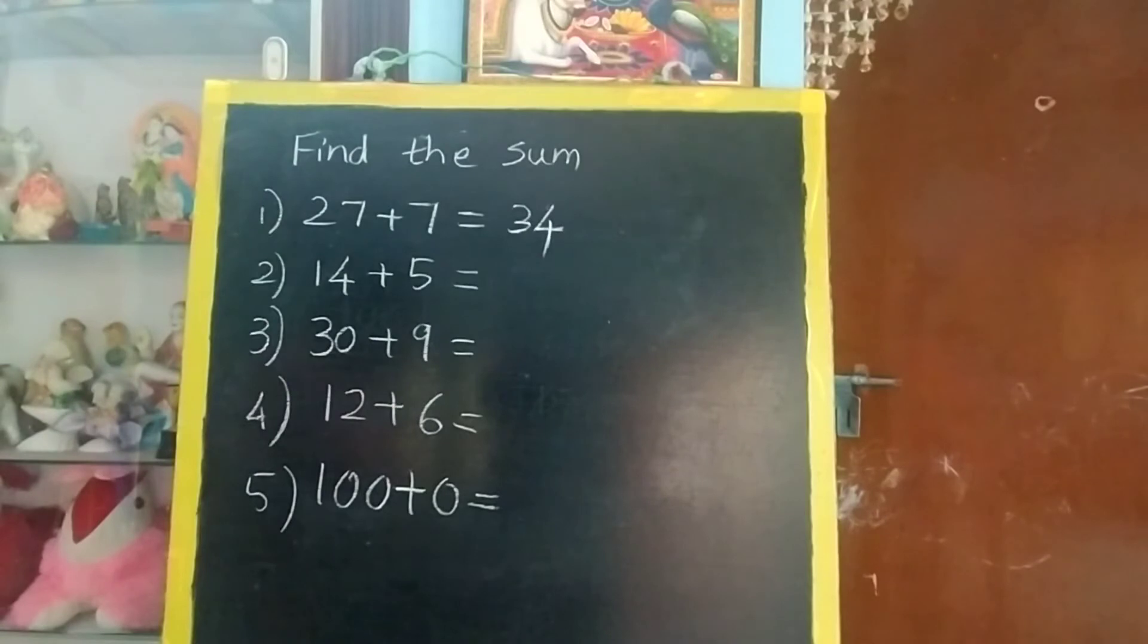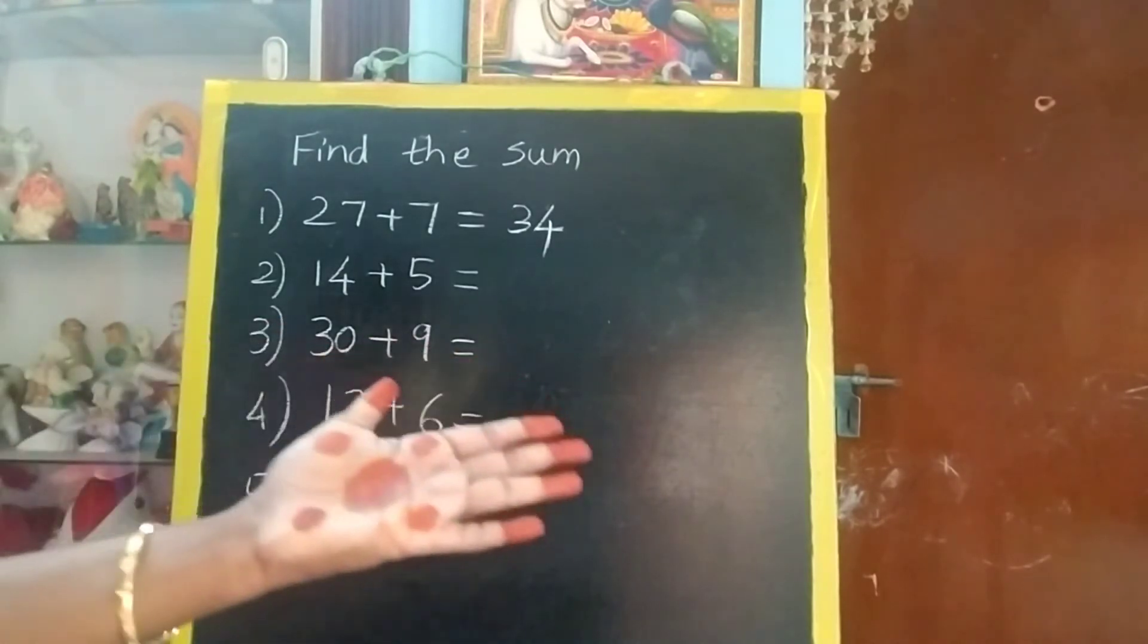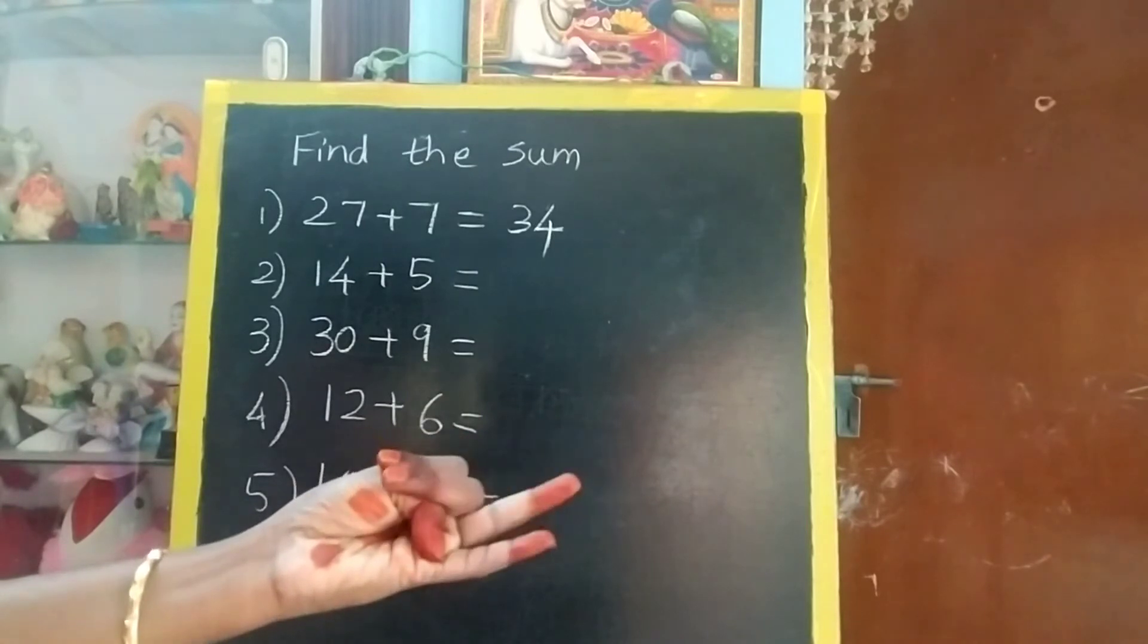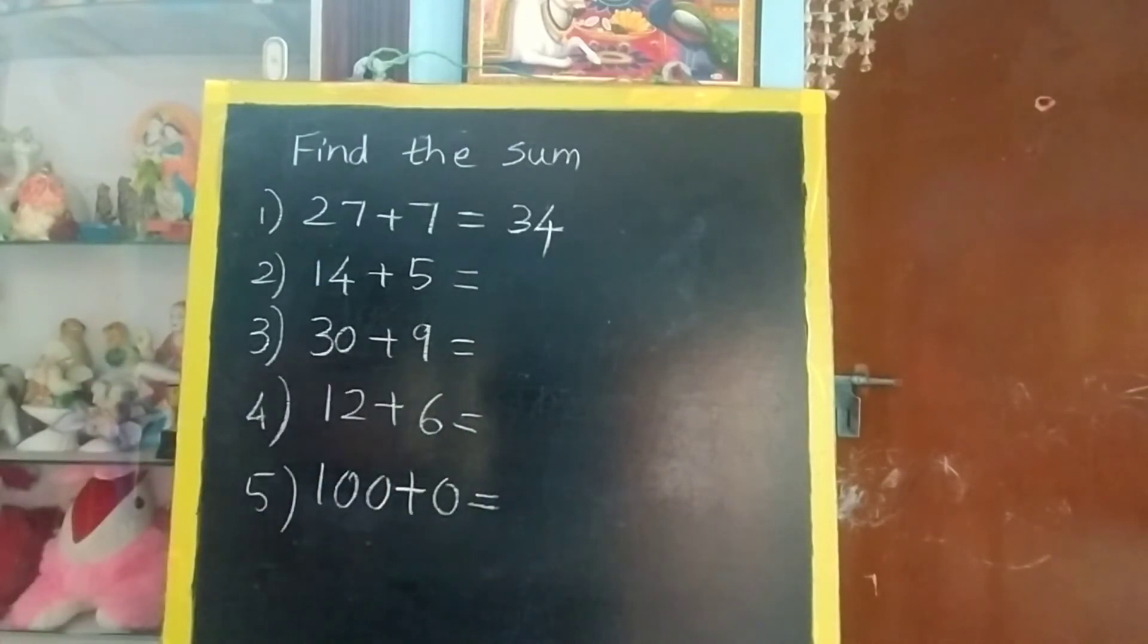Now this also. 14 in the mind, 5 in the finger. After 14, 15, 16, 17, 18, 19. The answer is 19.